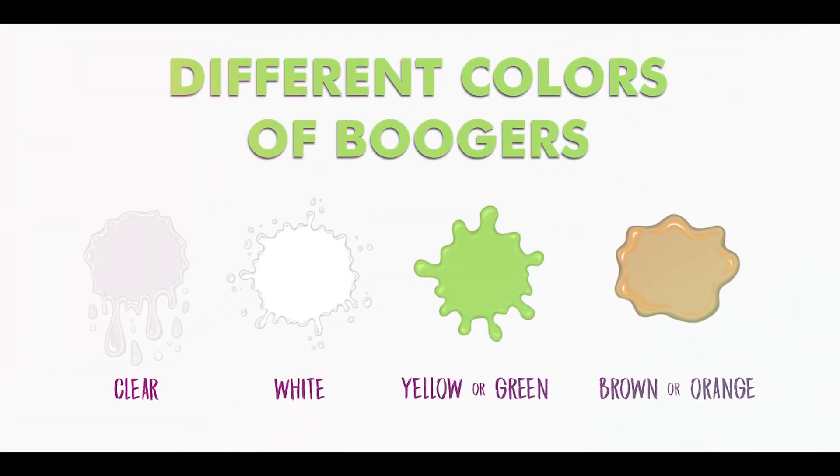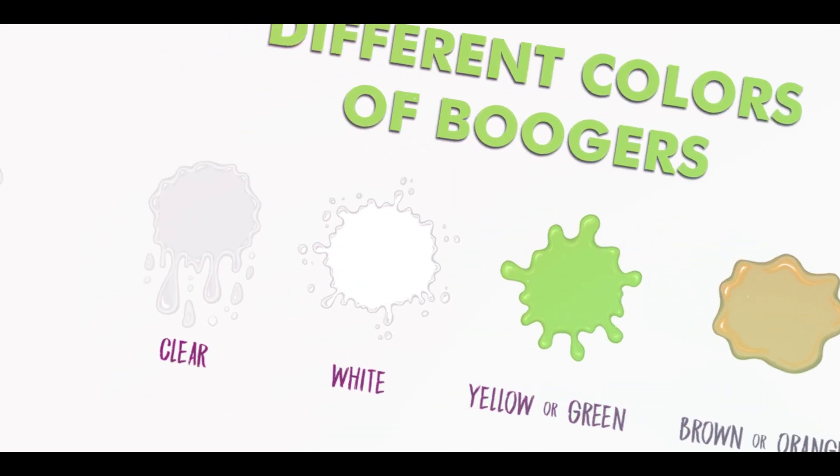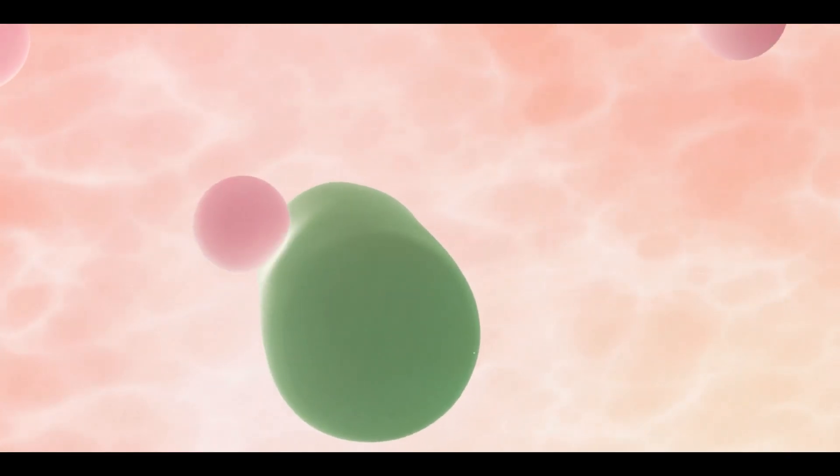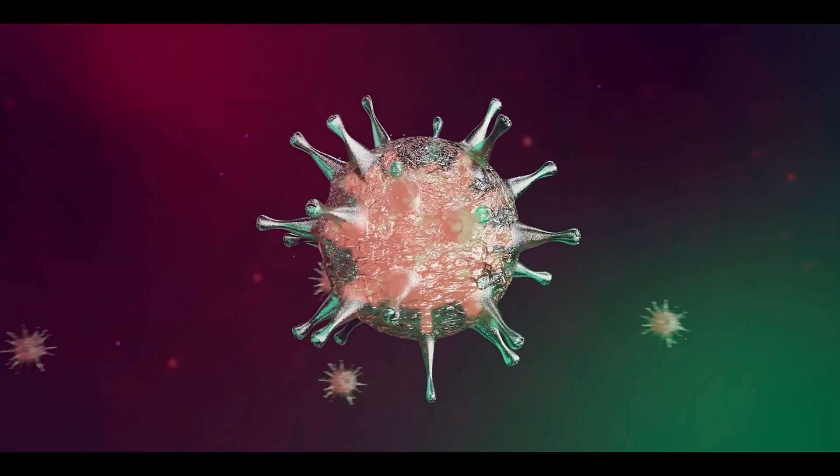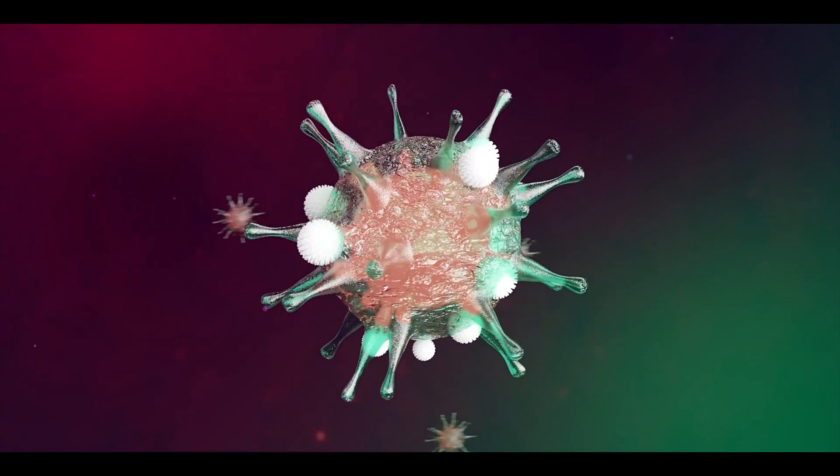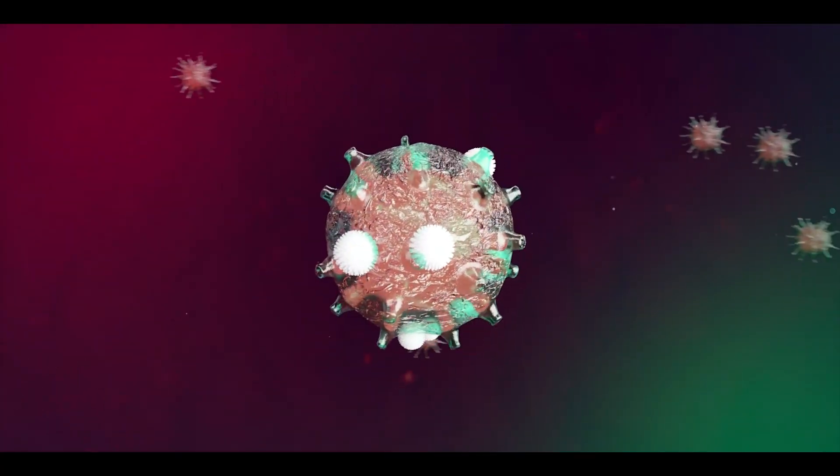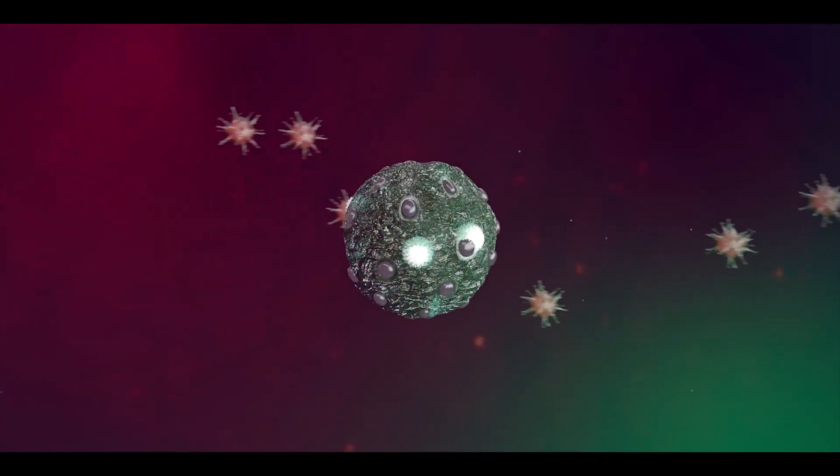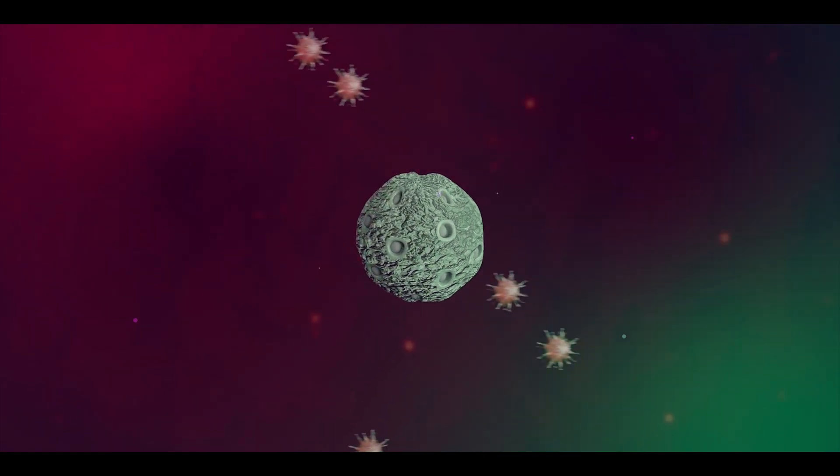You might have noticed that sometimes boogers can have different colors, like green or yellow. So, why does this happen? Well, the change in color is often due to the presence of white blood cells in the mucus. When our body detects harmful pathogens like viruses or bacteria, the immune system kicks into action, and white blood cells rush to the scene to fight off the invaders. The byproducts of this battle can sometimes result in the boogers taking on a greenish or yellowish hue.